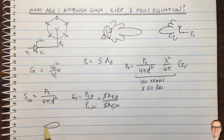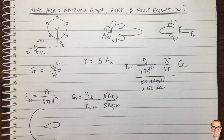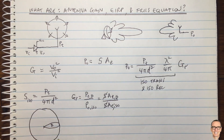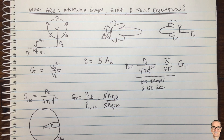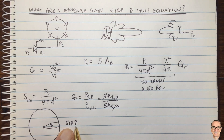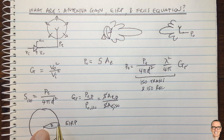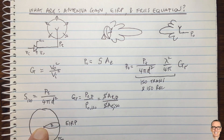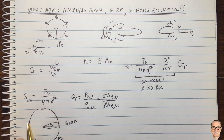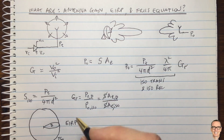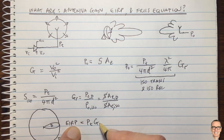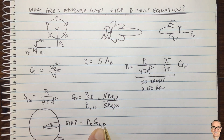EIRP relates a directed transmitter to an isotropic transmitter. With a directed transmitter, energy is concentrated in one direction; the isotropic transmitter radiates in all directions. The EIRP is the power you would have to put into an isotropic antenna to get the same power density as you get from your directed antenna in the direction of its main lobe. So EIRP = PT × GT, where GT is the transmit antenna gain.